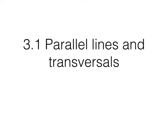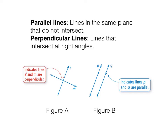Today's video lesson is on parallel lines and transversals. Please title your page in your math notebook: Parallel Lines and Transversals. Here are some examples of parallel and perpendicular lines. A parallel line is lines in the same plane that do not intersect. For example, figure B shows parallel lines — we can tell they're parallel with matching arrows on each line. The lines in figure A are perpendicular lines because they intersect at right angles. Pause the movie, copy these definitions, and write down these figures into your notes.